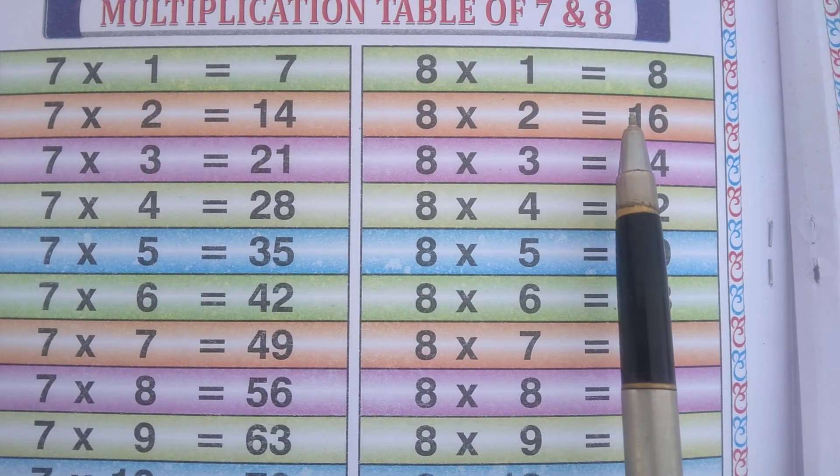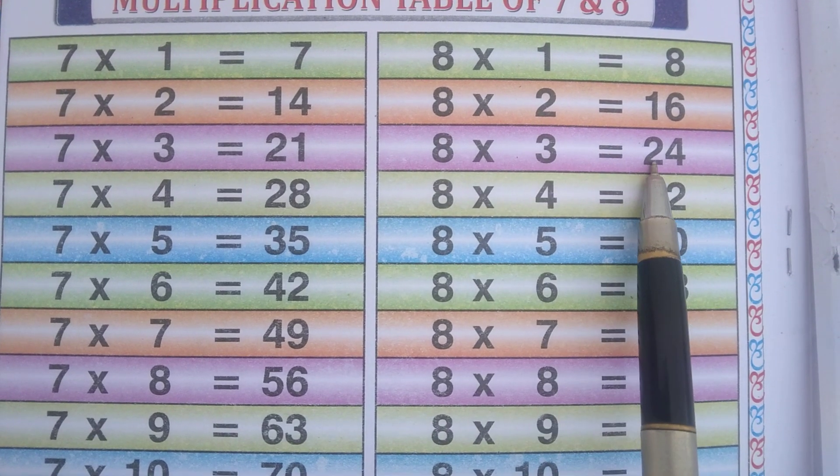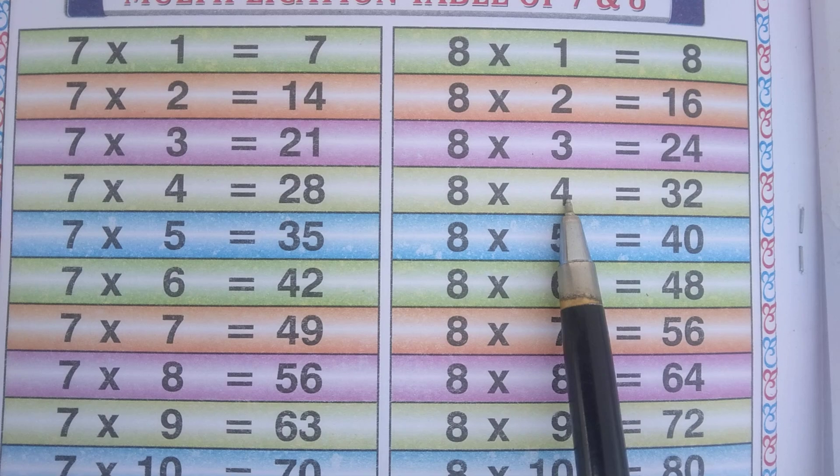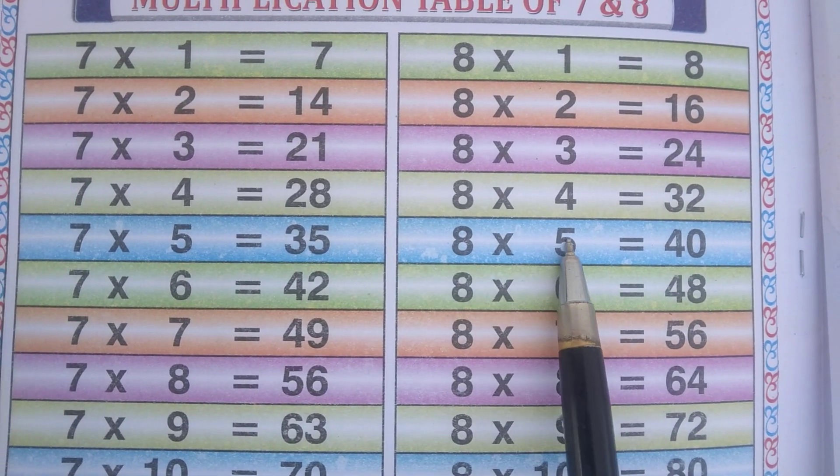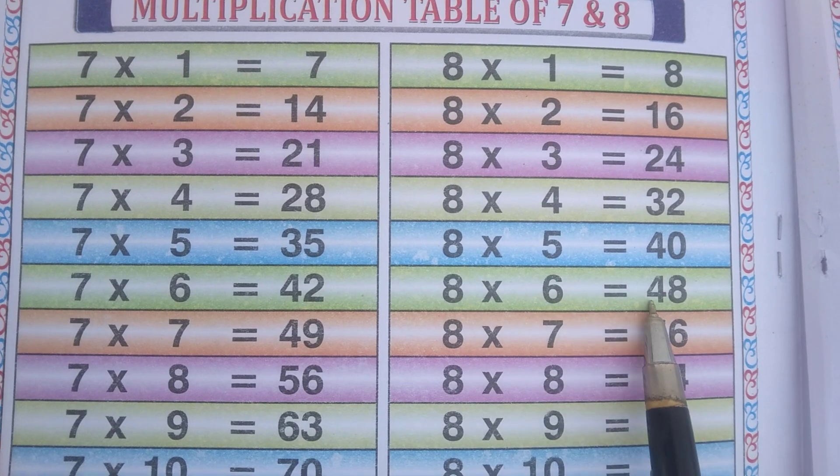8 2s are 16, 8 3s are 24, 8 4s are 32, 8 5s are 40, 8 6s are 48,